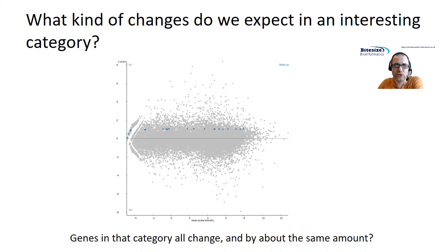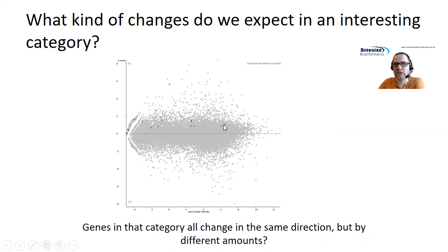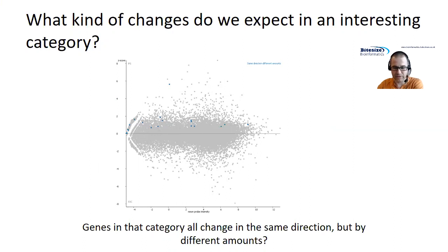In many cases that's probably too strict. It might be enough to say: I want my genes to generally be changing and I'd like it if they changed all in the same direction, but it's unrealistic to think they're all going to go up by the same amount. So I could set a requirement that these genes go up. In the example, you can see the highlighted genes are all going up, but some are going up a lot and some only by small amounts. In real functionally connected sets, it's much more likely that there'll be variability in the level to which genes are upregulated or downregulated.